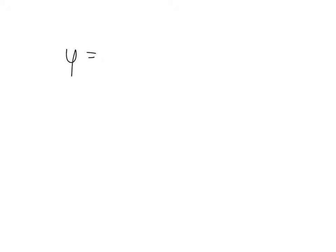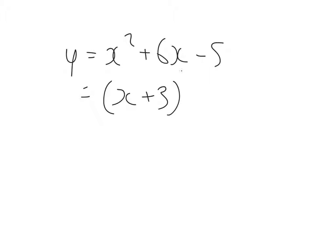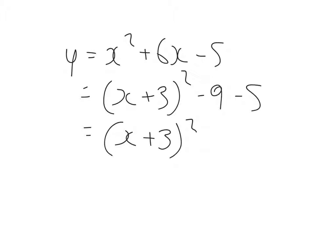We're going to complete the square for y equals x squared plus 6x minus 5. So, half the 6 down to 3, create a squared bracket. 3 squared is 9, so we get rid of that and we still need to take away 5. Final answer will be x plus 3, all squared, minus 14.